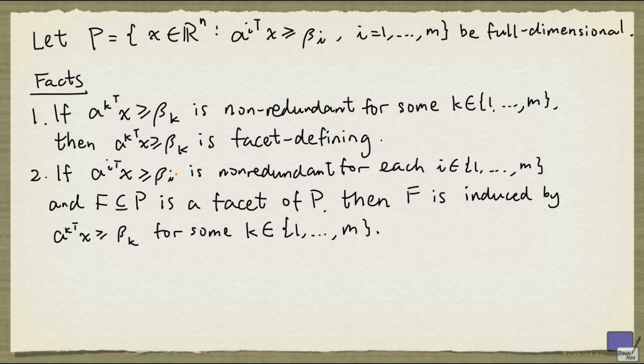Combining these facts, what we can say is that if P is defined by a minimal system of inequalities, and if P is full-dimensional, then each inequality must be facet-defining, and for every facet of P will have an inequality that induces it. Therefore, a minimal defining system is uniquely determined by the facet-defining inequalities, up to scalar multiples.